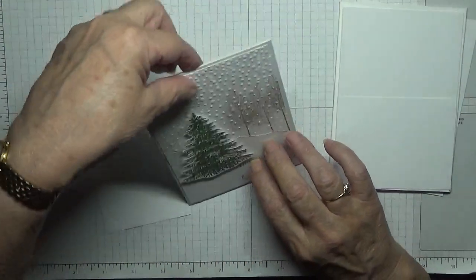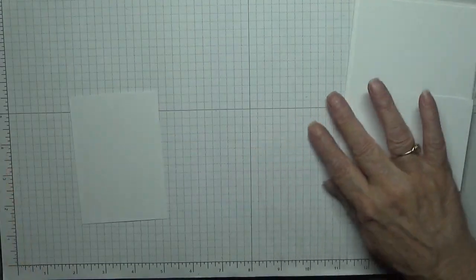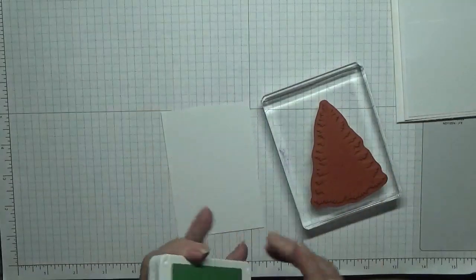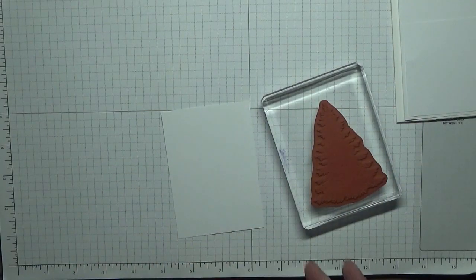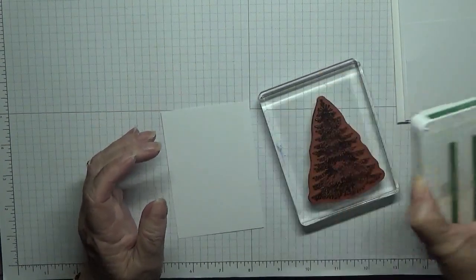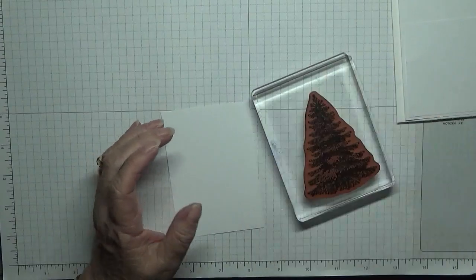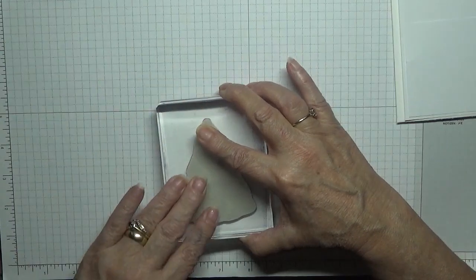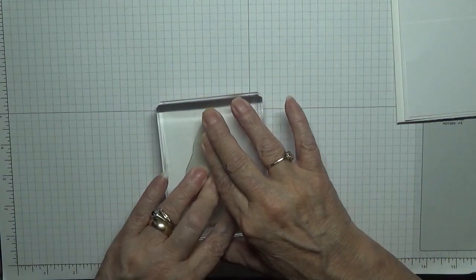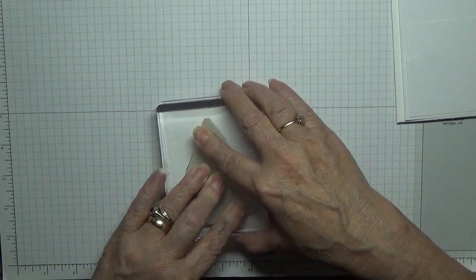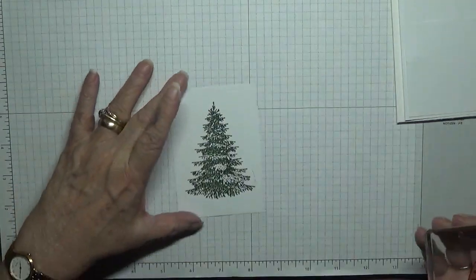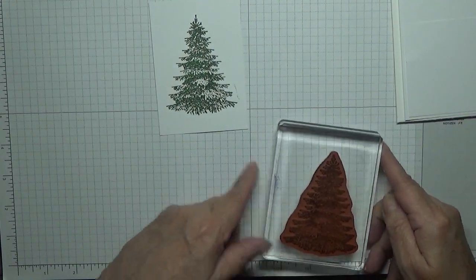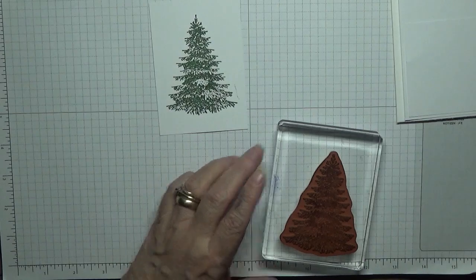Right to start with we're going to stamp the tree first so that it can dry before we cut it down and I'm using Gardner Green for this. Right this card is the first time I've used my new Gardner Green so it's very juicy and I'm just stamping that down on my scrap of card. Like that.